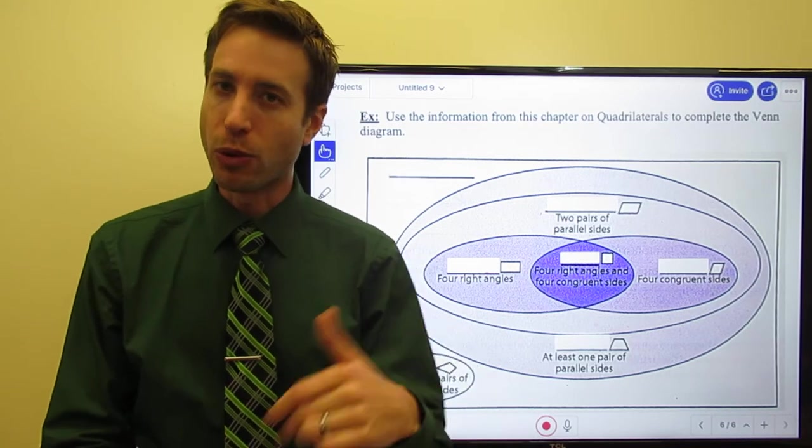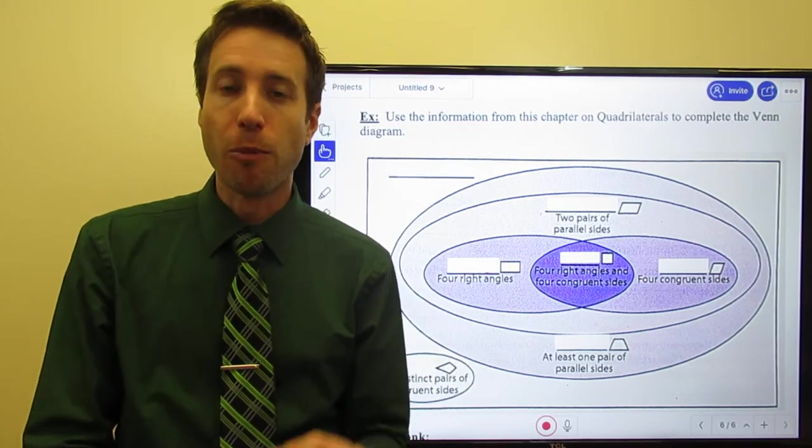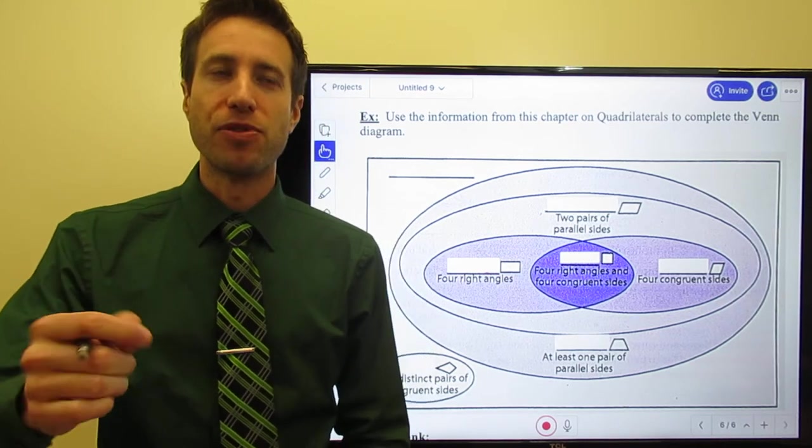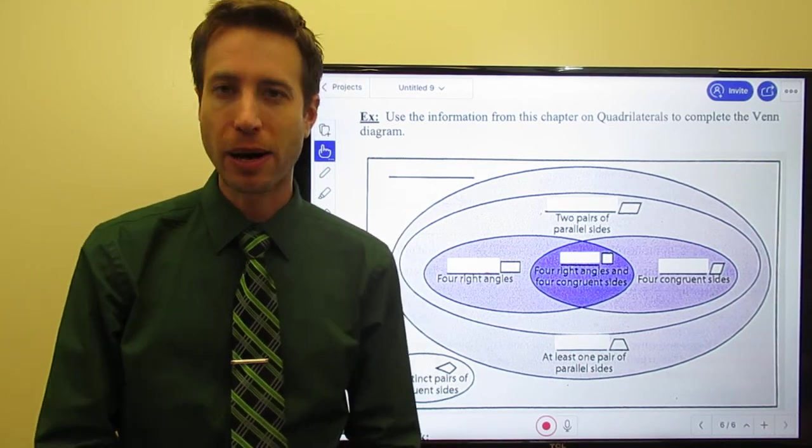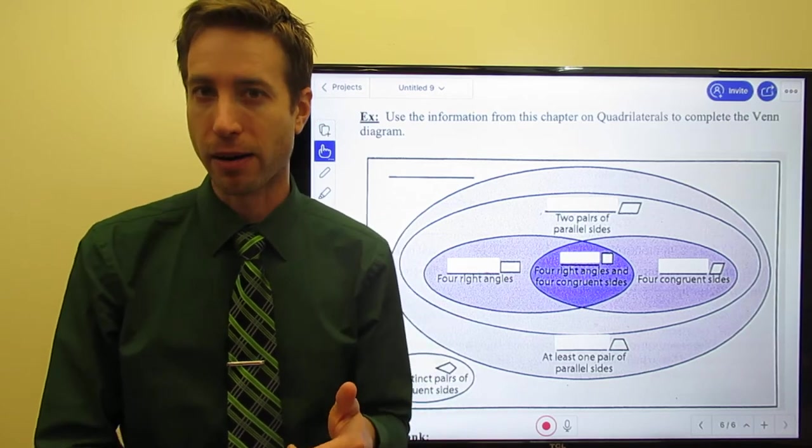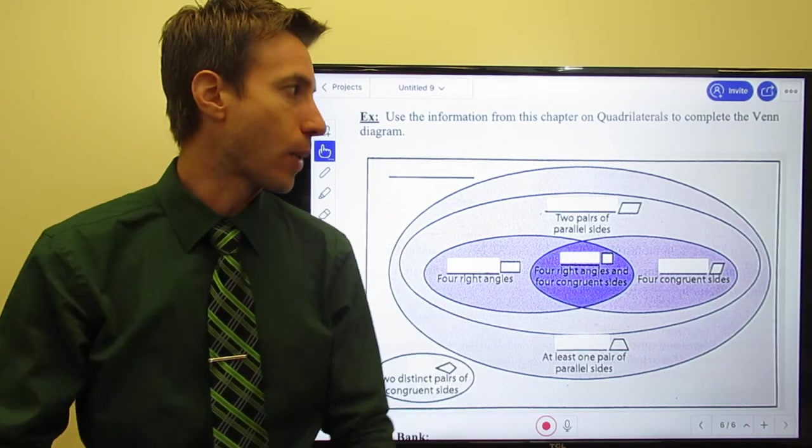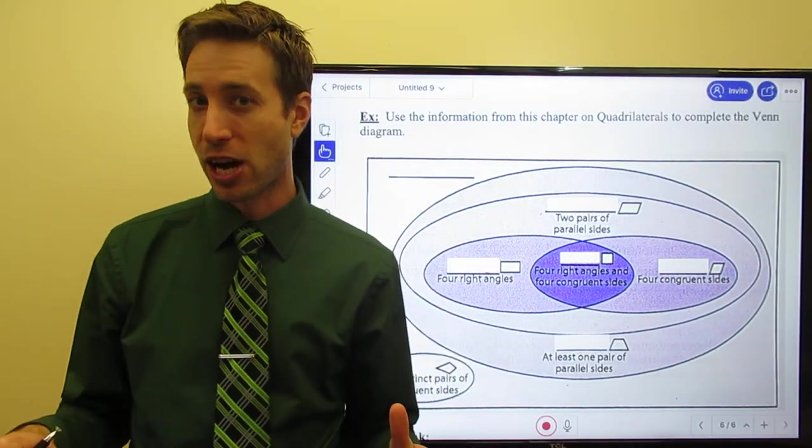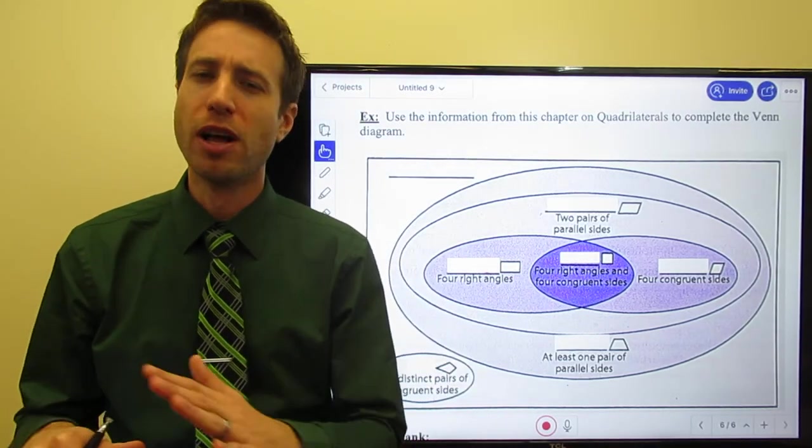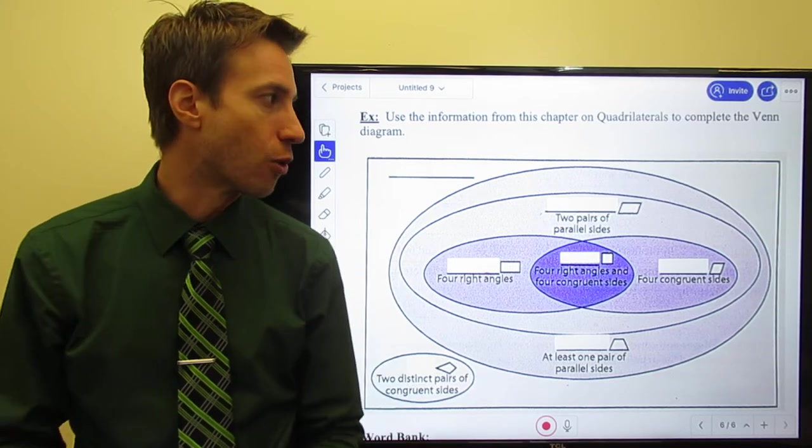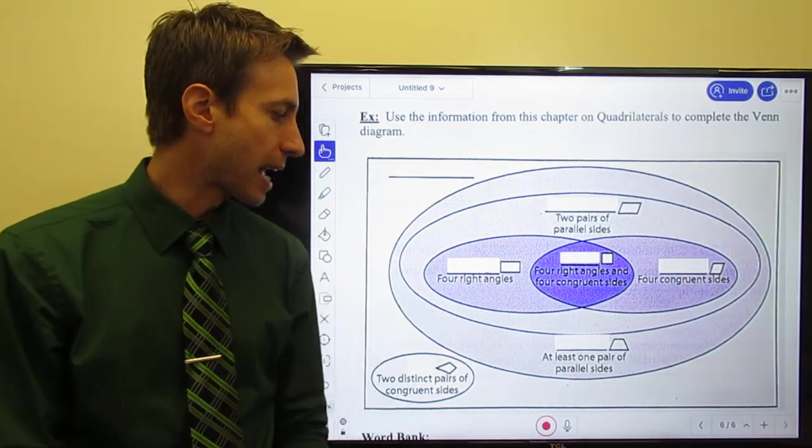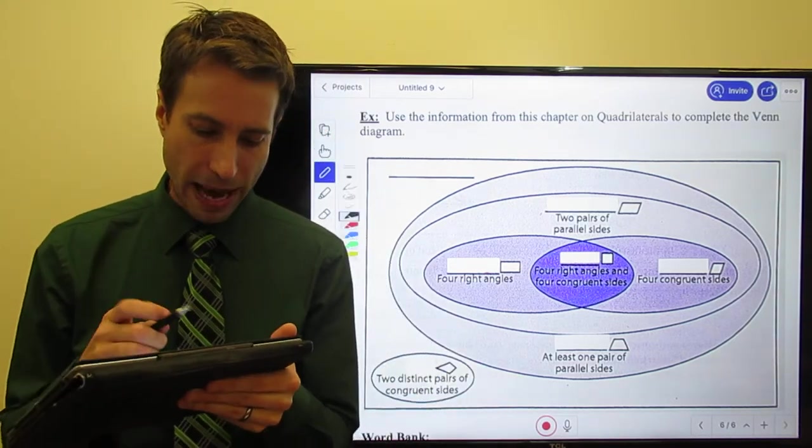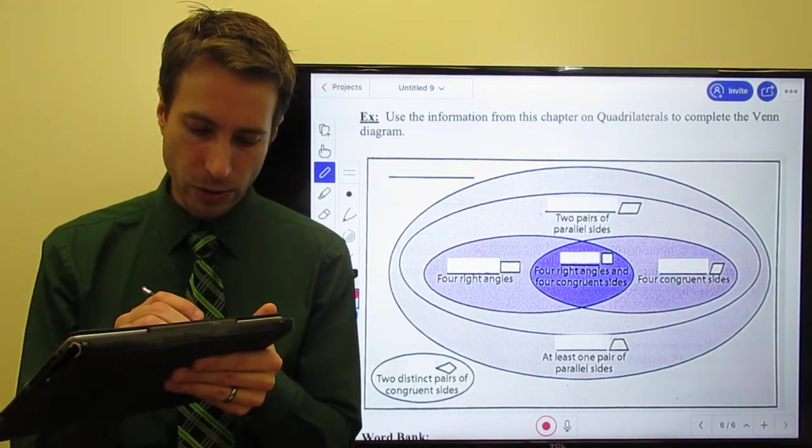And then the other one, the one we just took a look at was a trapezoid, which is absolutely a quadrilateral, but is not quite a parallelogram because it only has one pair of parallel sides. Anyway, really the whole point of this diagram right here is just to sort of help us rehash out and go through the shapes that we've looked at so far. So of course, starting out this entire chapter, these last few sections have been all about quadrilaterals.